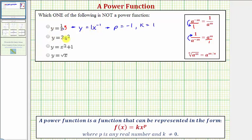Next we have y equals three x squared. This does fit the form of a power function, where p equals two and k equals three.